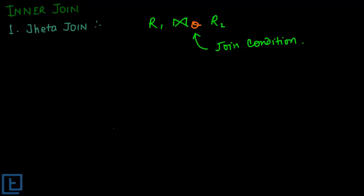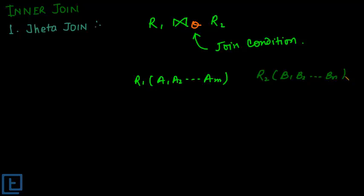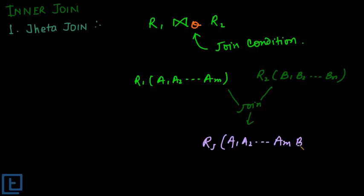Let's take two example relations. R1 has attributes a1, a2, ..., am and we have to join this with another relation r2, which has attributes b1, b2, ..., bn. If we join these two relations, the outcome — let's call it rj — will have the attributes of both r1 and r2: a1, a2 to am, and b1, b2 to bn.